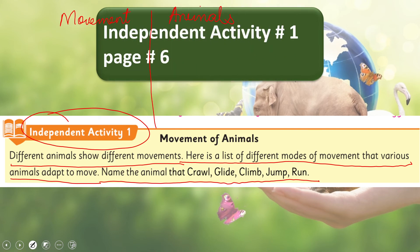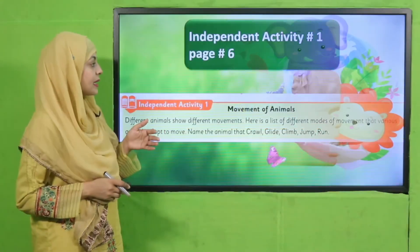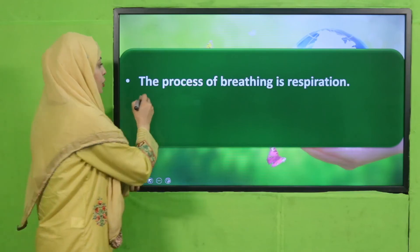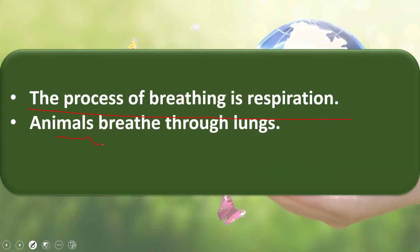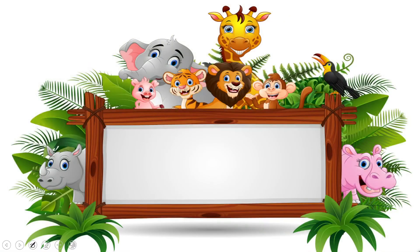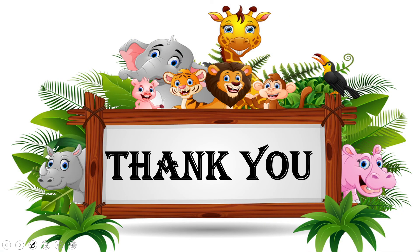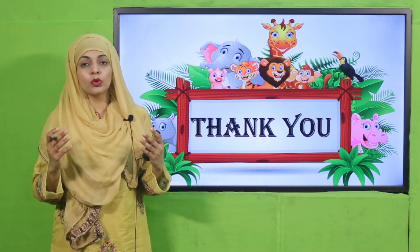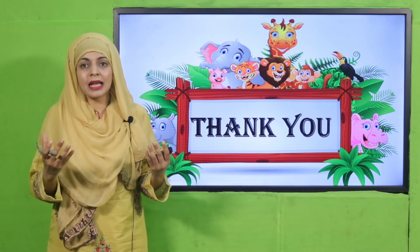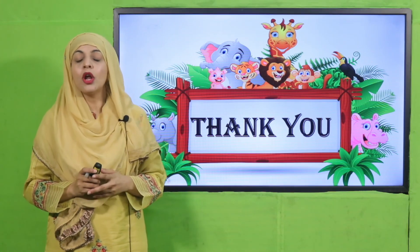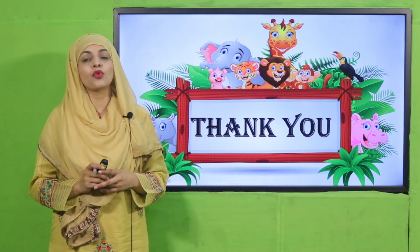This is Independent Activity number one, given on page number six. Now is the time for wrap-up. Today we have learned that the process of breathing is called respiration — animals breathe through lungs and plants breathe through stomata on their leaves. I hope you have enjoyed today's lecture. Aapne ek aur characteristic dekh liya living things ka — which is respiration. Dono mein respiration hoti hai, lekin usko perform karne ka tarika dono mein different hai. Keep everybody around you safe, have a good day, thank you so much, and Allah Hafiz.